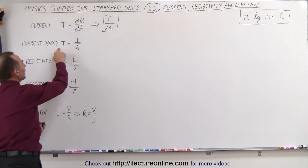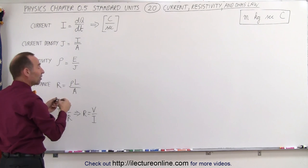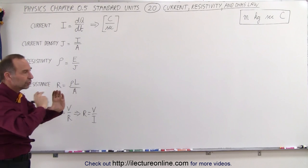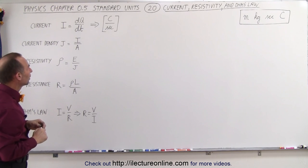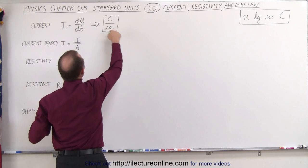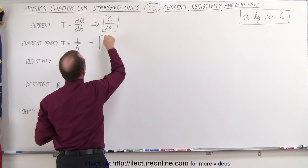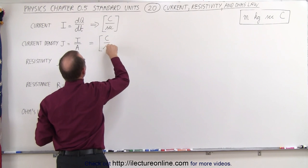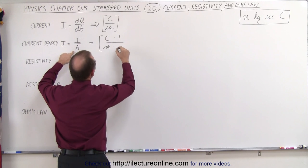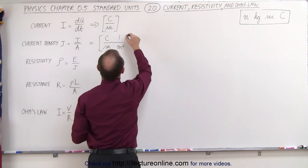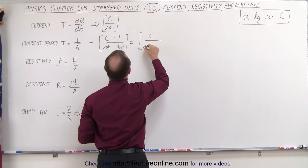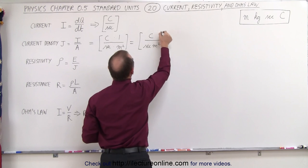What is current density? Current density is defined as the current divided by the cross-sectional area through which it passes — the cross-sectional area of the conducting material through which the current is flowing. We find the unit by starting with the unit of current, which is Coulombs per second, and dividing by the area in meters squared. So the standard units for current density are Coulombs per second per meter squared.